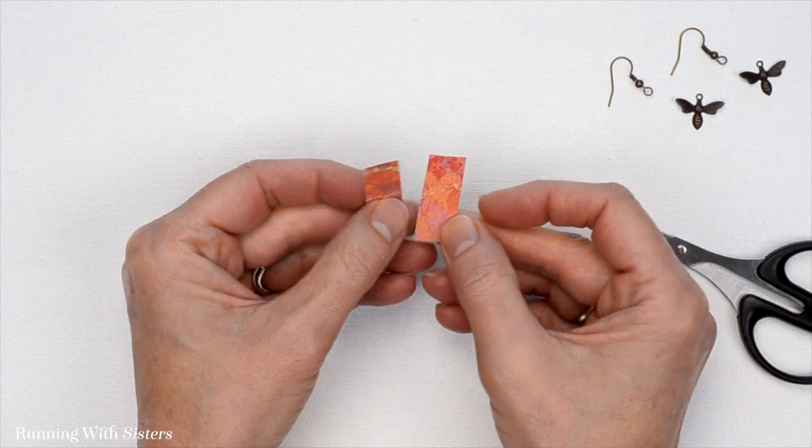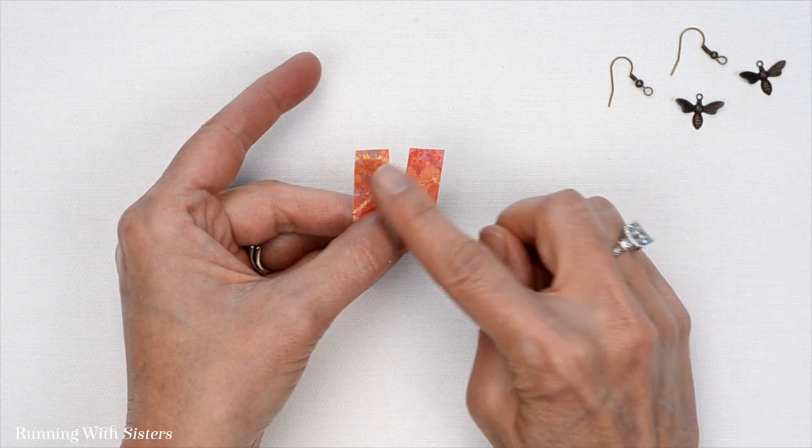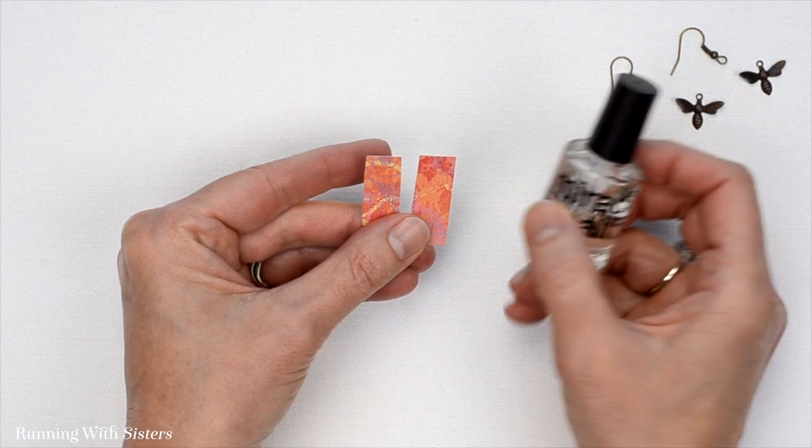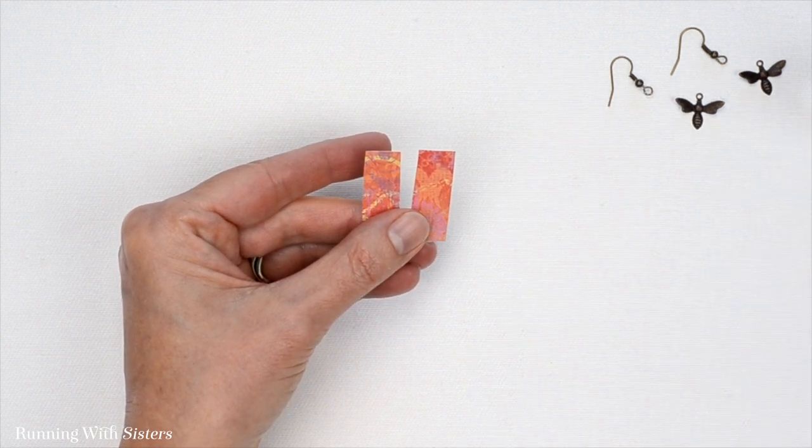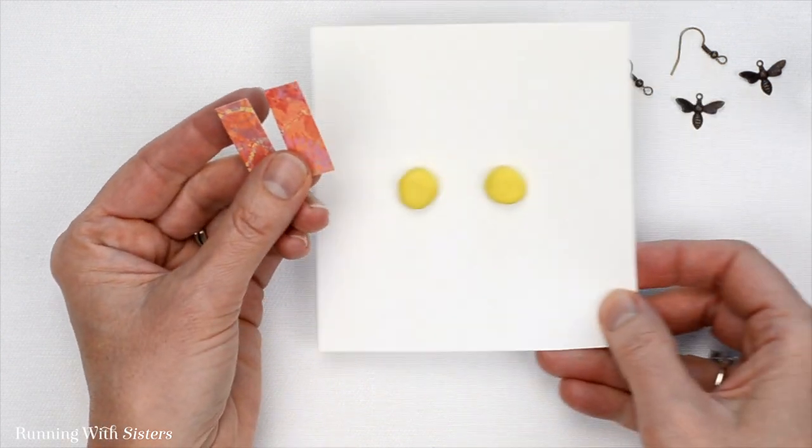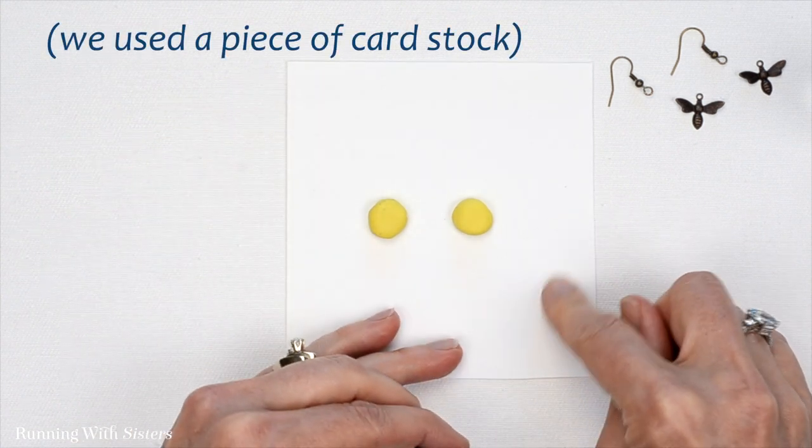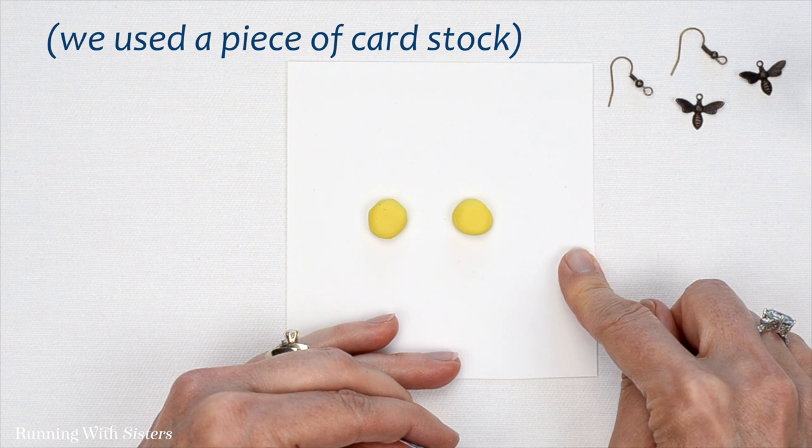Now what we want to do is coat both sides of this paper with our handy dandy nail polish. To do that, we've got a little trick for you. I made a little work area so that I don't get nail polish on my work surface. This is basically just a piece of cardstock that I cut out.